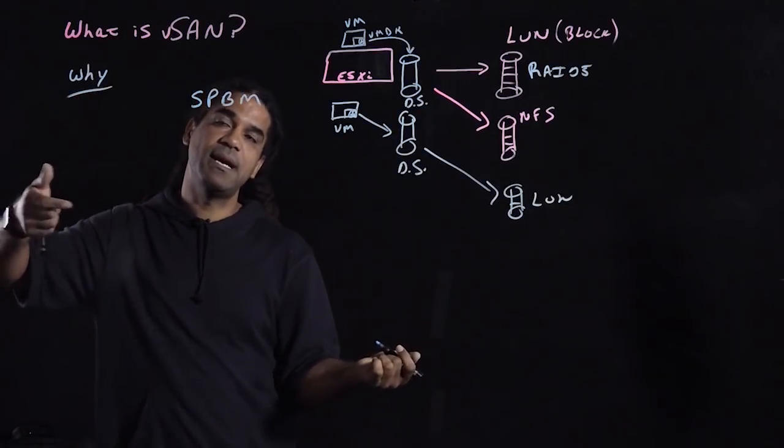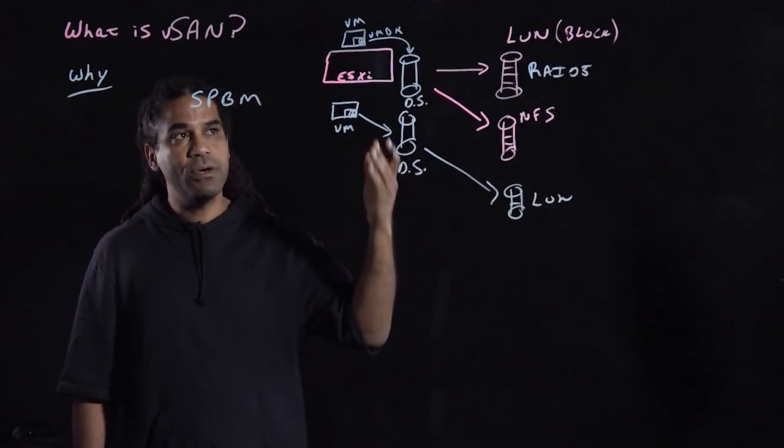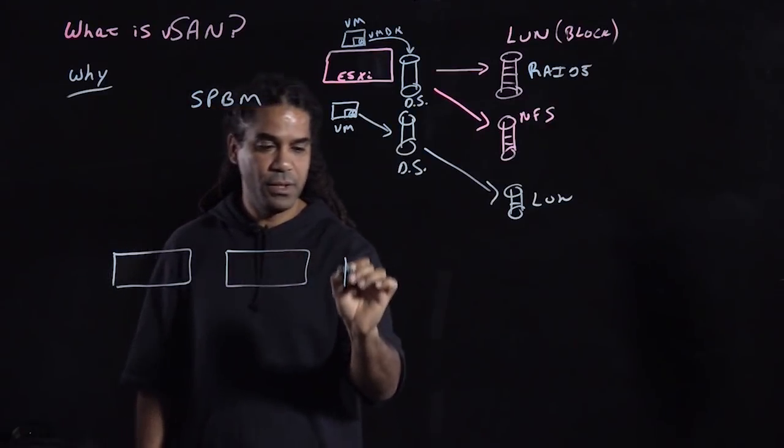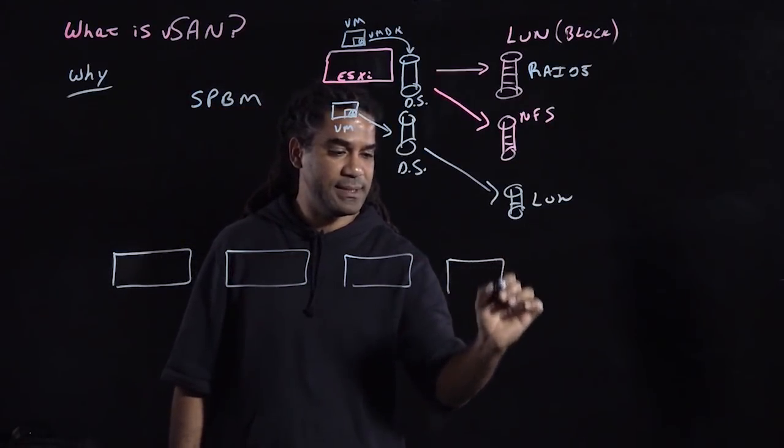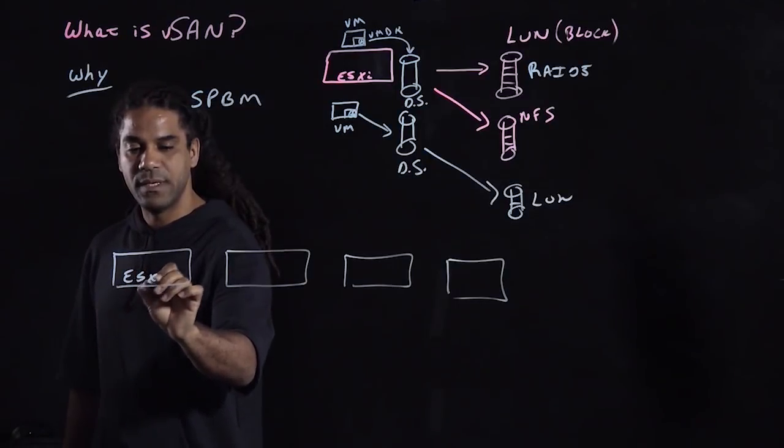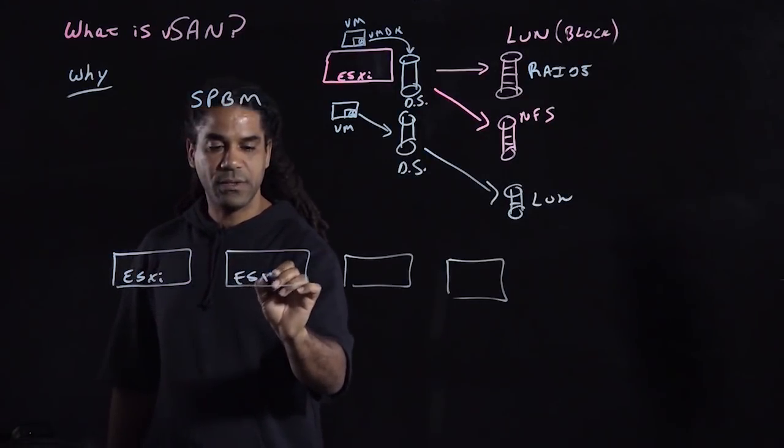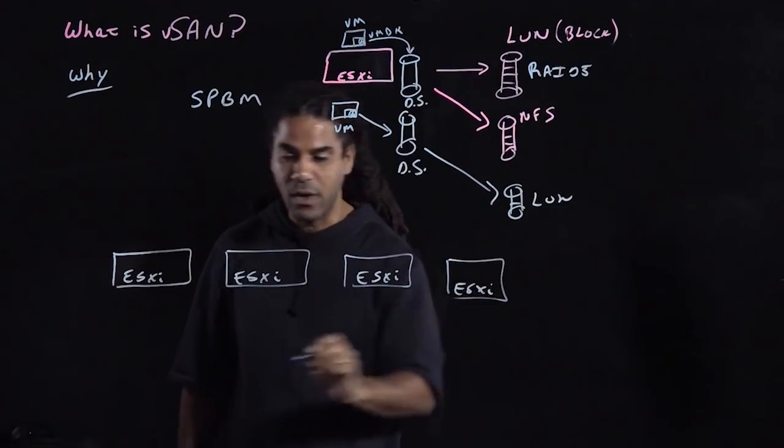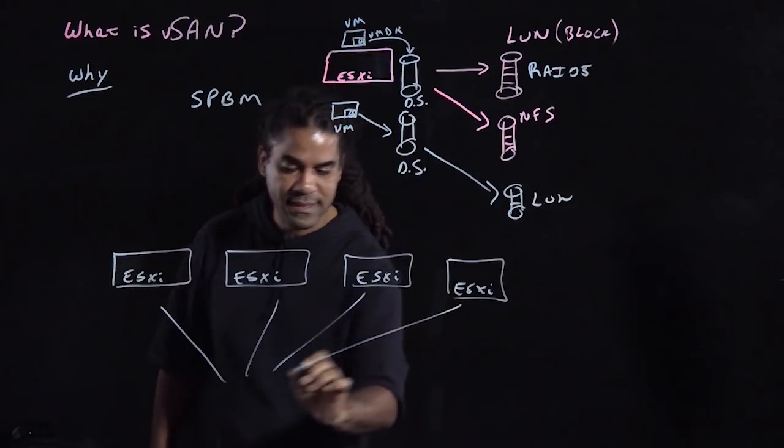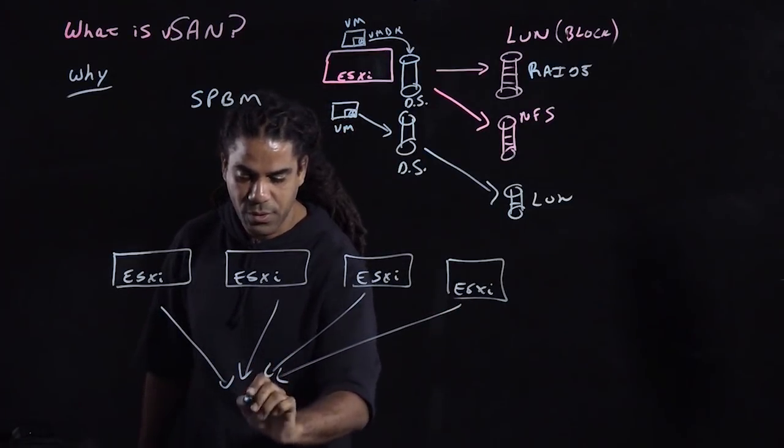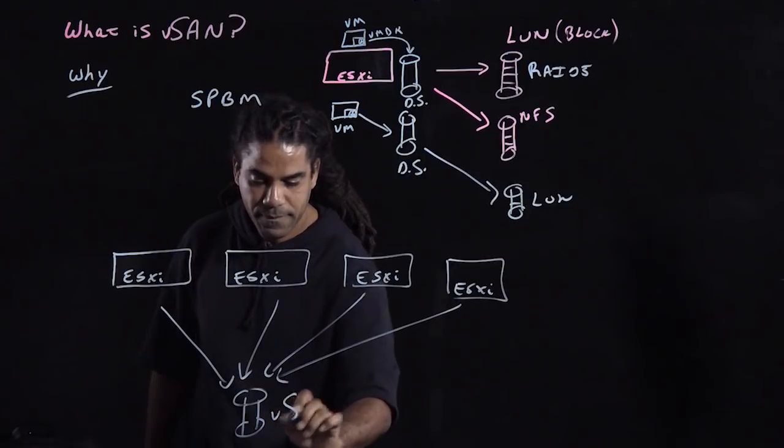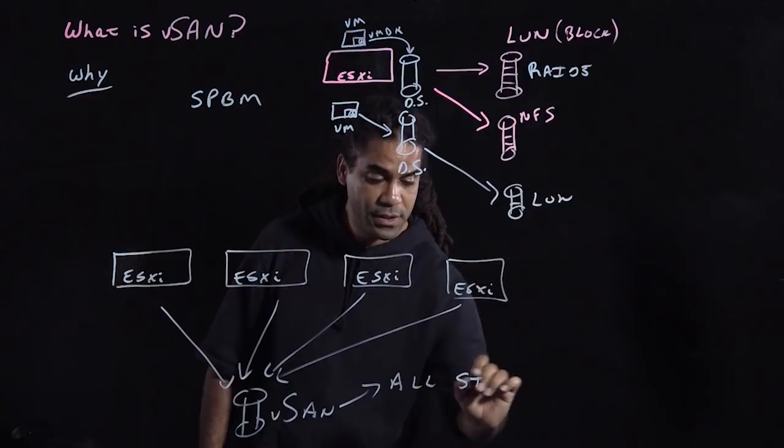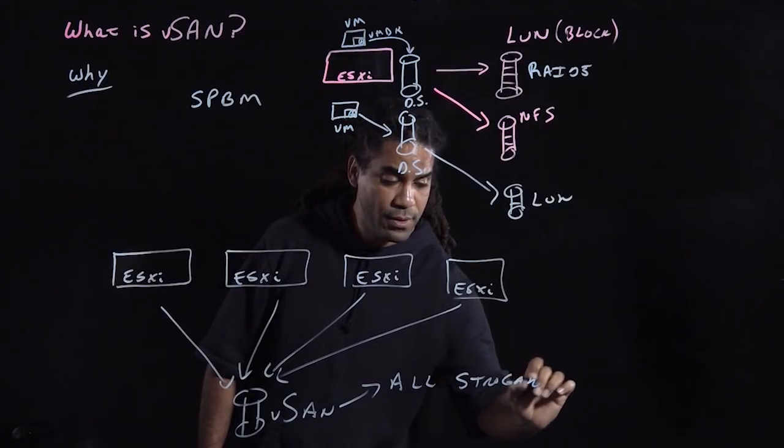So what is vSAN? vSAN is an object-based, in-kernel storage solution that allows you to provide storage on a per-VM basis. vSAN runs in-kernel in each of the ESXi hosts in that cluster, and all of those hosts will have a single datastore, your vSAN datastore, that can provide all of your storage services on a per-VM level.